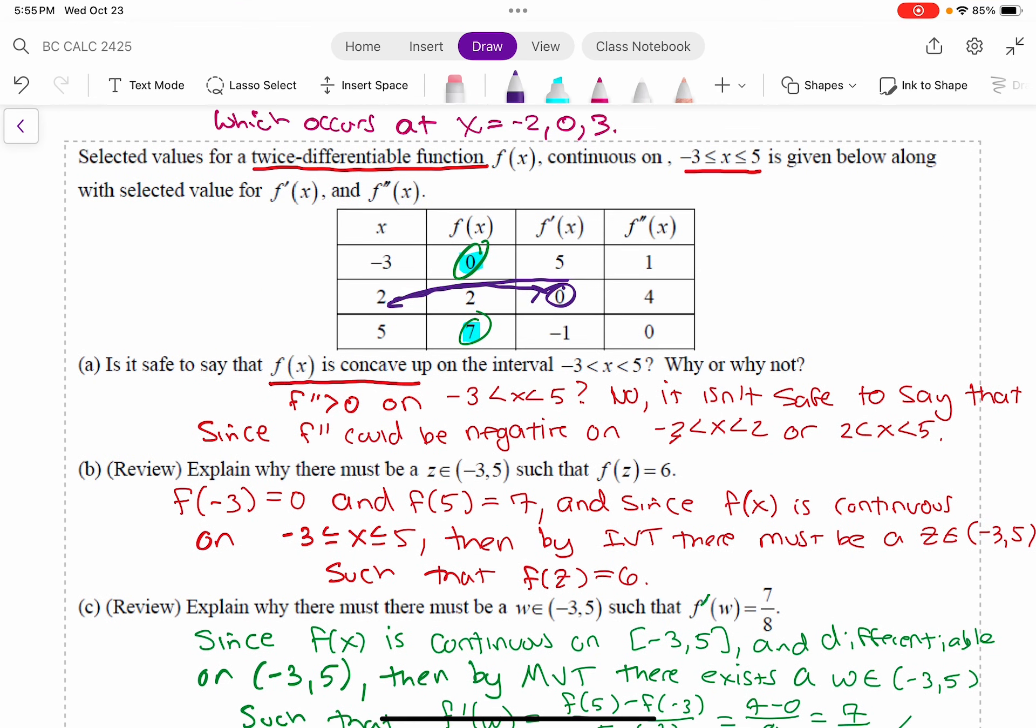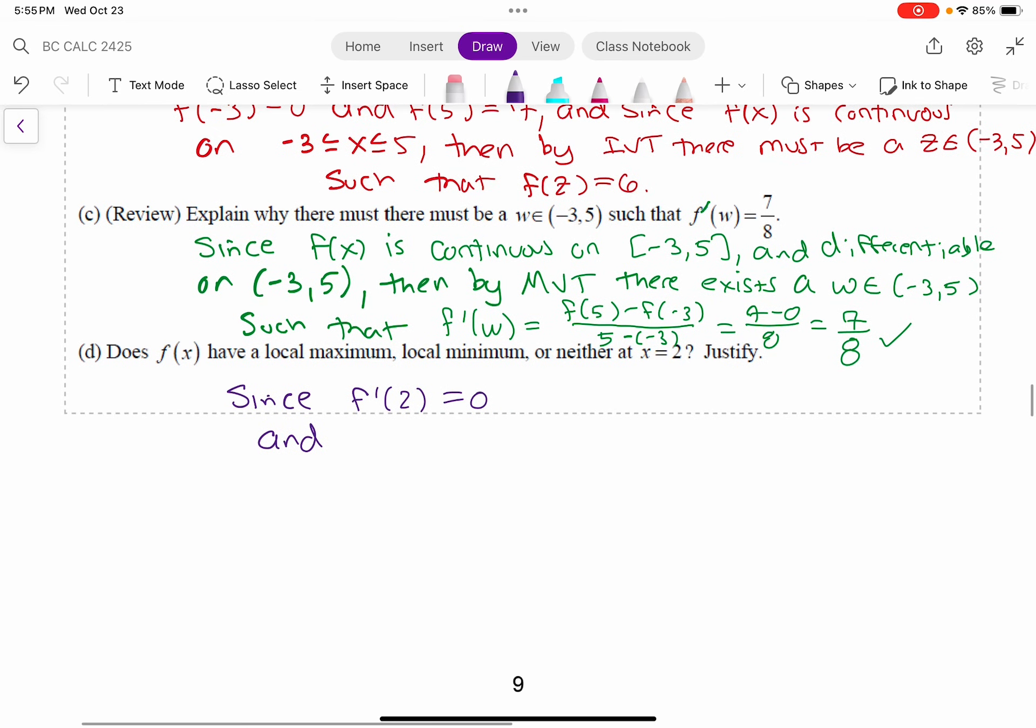which is 4, and that's positive. And now that's enough info to make a conclusion. Okay, so I've got a critical point and then the second derivative is positive. So then that implies that f has a,